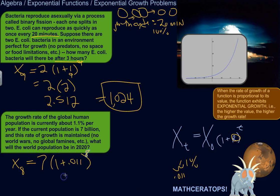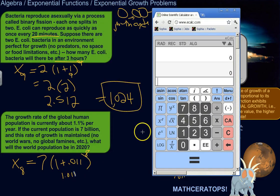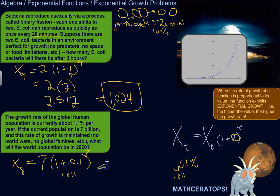So this is one, so one plus 0.011 is 1.011. So let's raise that to the power of eight, follow the order of operations here, raise that to the power of eight, and multiply it by seven. We should have our answer at 1.011 raised to the power of eight times seven. So about 7.64 billion people by 2020.